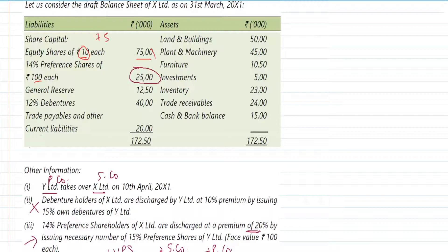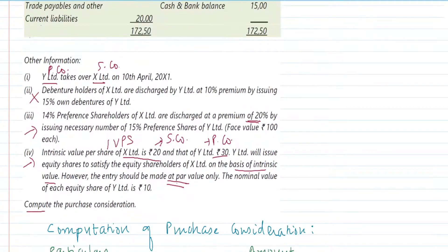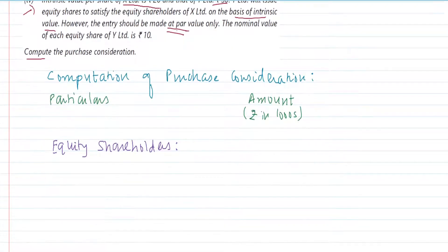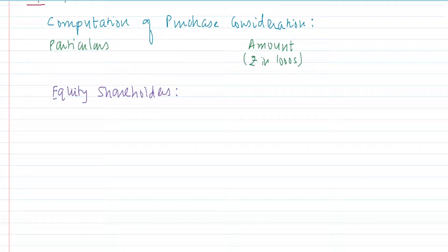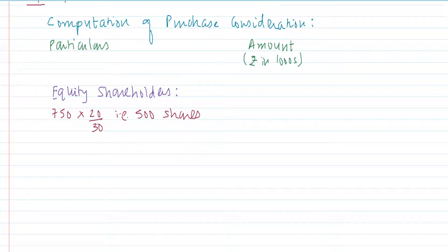There are 750 equity shares. The share exchange ratio is 20 divided by 30, or 2 by 3, which gives us 500 shares of Y Limited. Y Limited is the purchasing company, and they will issue these shares at par — that is, at rupees 10 each. So, we are giving equity shareholders something worth 5,000.